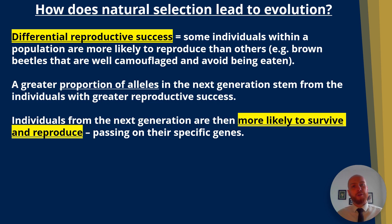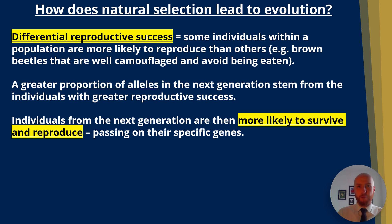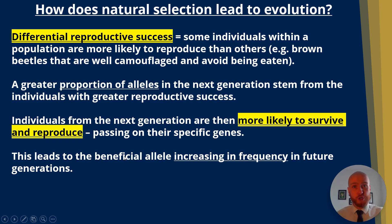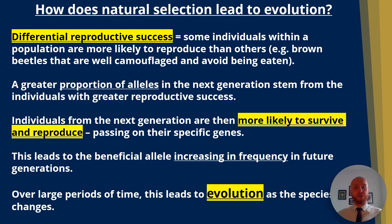It's important to know that a gene codes for a protein, and proteins can give characteristics like colour, or enzymes, that can really affect an organism's survival. This leads to the beneficial allele increasing in frequency in future generations, and over large periods of time this leads to evolution — how a species changes over generations.